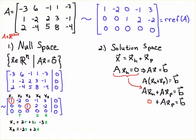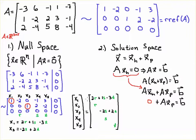The variables x2, x4, and x5 are free variables, parameterized by r, s, and t respectively. Solving for x1: moving terms over gives x1 = 2r + 1s − 3t. Solving for x3: gives x3 = −2s + 2t. So x2 = r, x4 = s, and x5 = t.